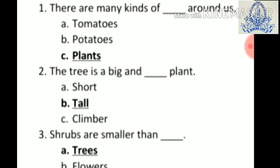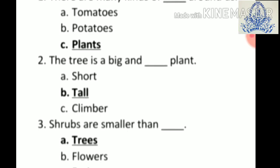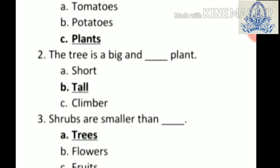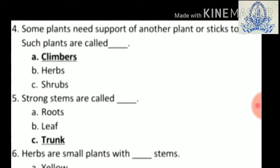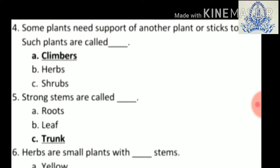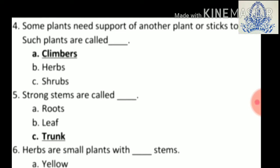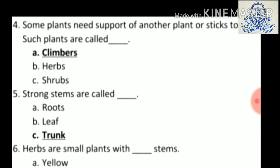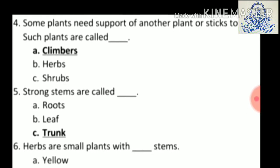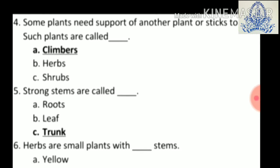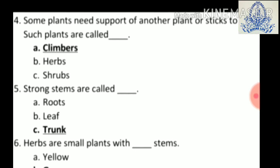Third: shrubs are smaller than dash — a) trees, b) flowers, c) fruits. Answer is a) trees. Fourth: some plants need support of another plant or stick to grow; such plants are called dash — a) climbers, b) herbs, c) shrubs. Answer is a) climbers. Fifth: strong stems are called — a) roots, b) leaves, c) shrubs. Answer is trunk.